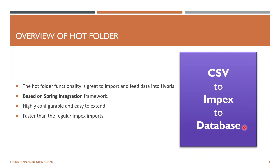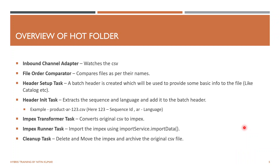Hot Folder has certain components. First is the inbound channel adapter, which watches the CSV coming into that folder. Second is the file order comparator, which compares the file recently received to the previously existing files in the same folder. Next is the header setup task.